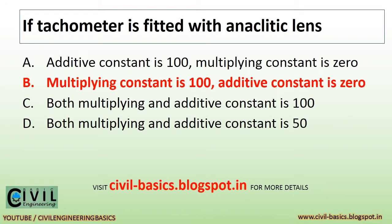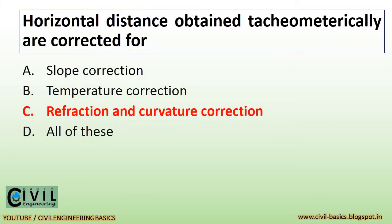If a tacheometer is fitted with an anallactic lens, the multiplying constant is 100 and the additive constant is 0. Horizontal distances obtained tacheometrically are corrected for refraction and curvature correction.